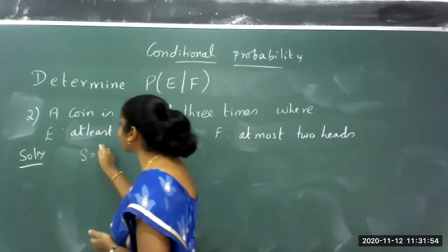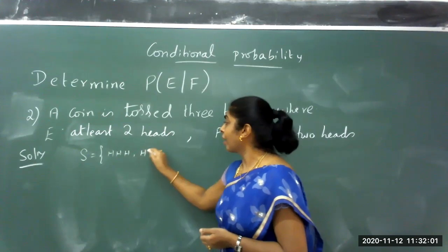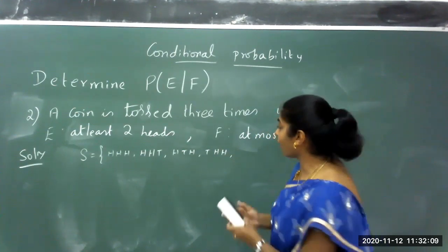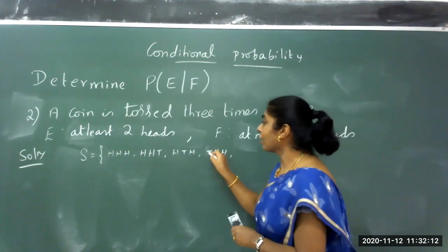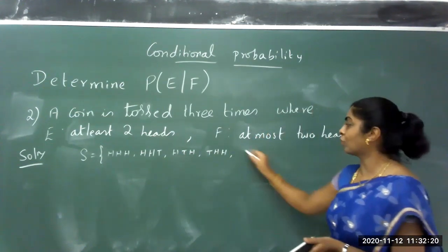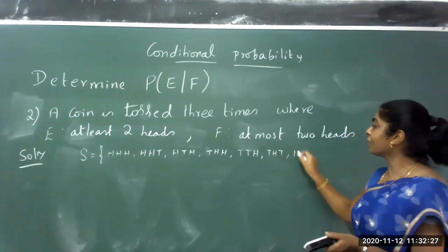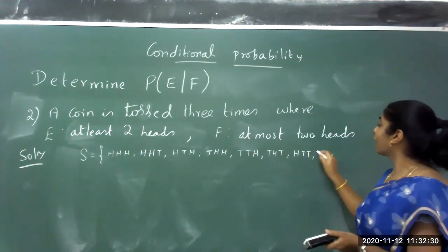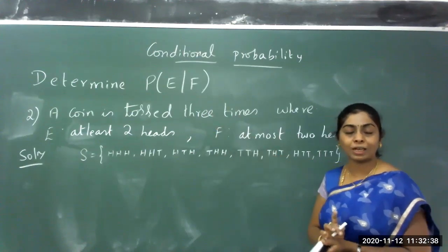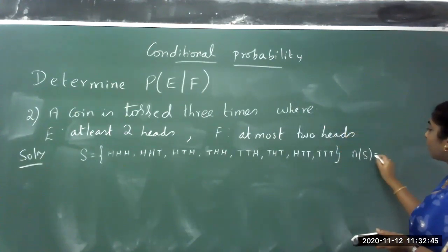The coin is tossed 3 times and the sample space is: all 3 are heads (HHH); first 2 heads and a tail in different orders — HHT, HTH, THH (3 cases with 2 heads); then cases with 2 tails — TTH, THT, HTT; and finally all 3 tails (TTT). The number of elements in the sample space is 8.